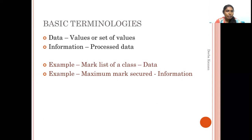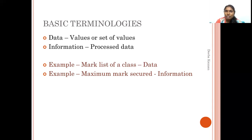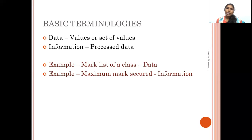So, the maximum mark in this class — who is the topper, who is first — that is information. To summarize: data is a raw set of values, and information is processed data. We can collect all the raw data and extract information from it.